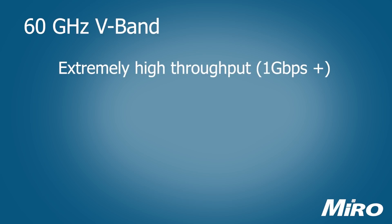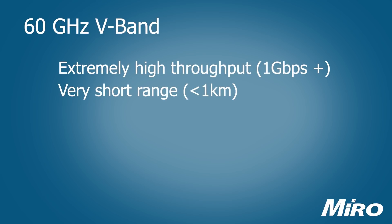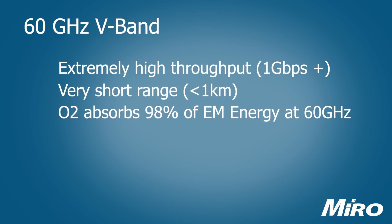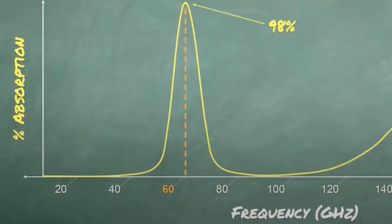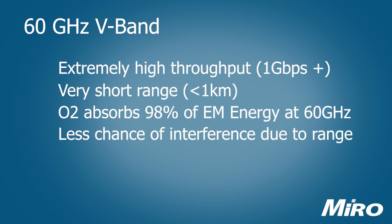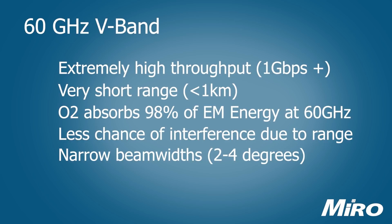In addition to the usual propagation limitations of higher frequencies, 60 gigahertz also has to contend with something known as oxygen absorption. At 60 gigahertz, oxygen molecules become extremely absorbent towards electromagnetic energy, leading to an attenuation rate of up to 98 percent, meaning that up to 98 percent of the energy within the signal is lost. However, the relatively short range of these signals means they are less likely to overlap with neighboring millimeter wave networks. This, in conjunction with extremely narrow beam widths, further reduces interference and allows for increased density and scalability, especially in urban environments.